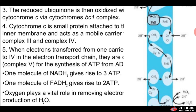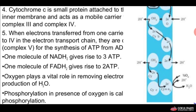Oxygen plays a vital role in removing electrons and in the production of H2O. The phosphorylation in the presence of oxygen is known as oxidative phosphorylation. In photosynthesis, phosphorylation depends on light and is called photophosphorylation. Here it is independent of light and takes place in the presence of oxygen, so it is called oxidative phosphorylation.